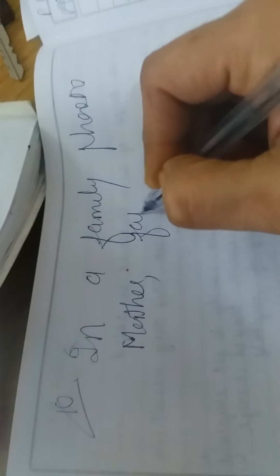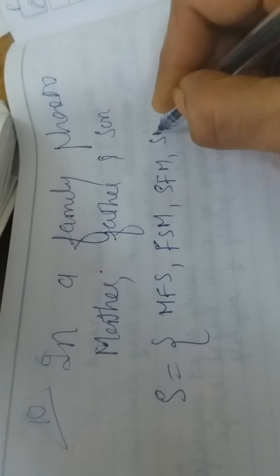Let's see in sample space, mother, father and son. Now see how can we spread? What can we do in sample space? Mother, father, son. Father, son, mother. Son, father, mother. Son, mother, father. Mother, son, father. Father, mother, son.